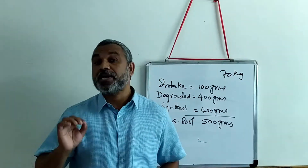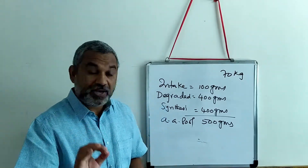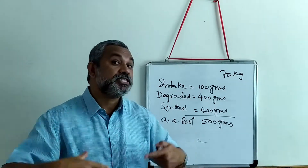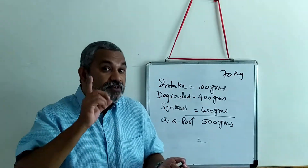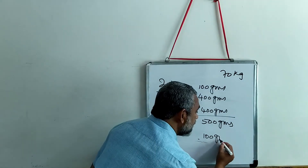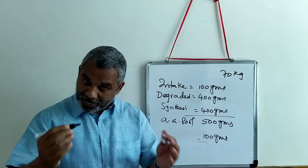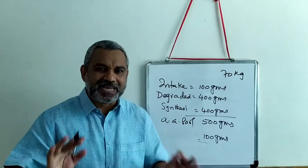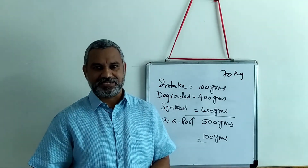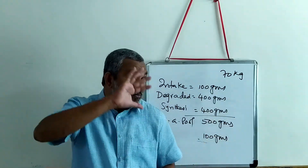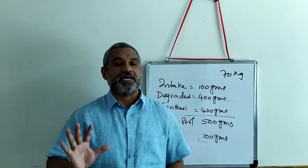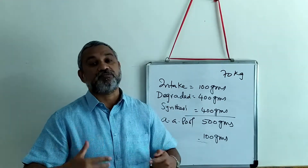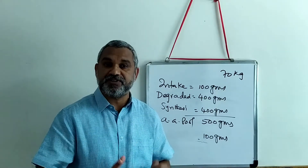From this 500 grams of amino acid pool, about 400 grams is reutilized for synthesizing newer proteins. That leaves 100 grams of amino acid which is totally catabolized, degraded, and excreted. This gives a brief idea about the total amino acid pool and how the whole process of turnover is happening in every individual.